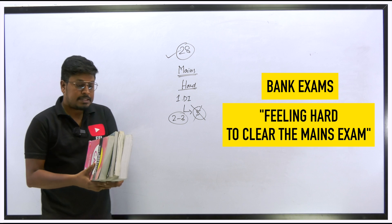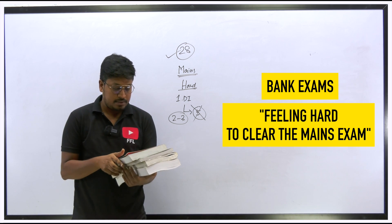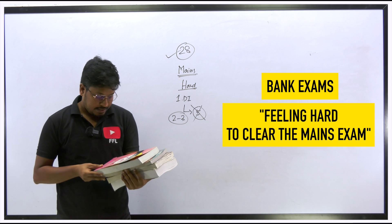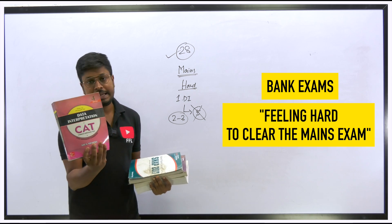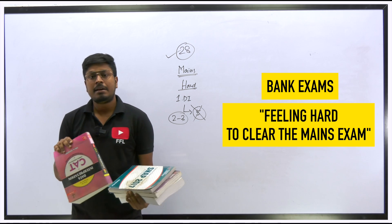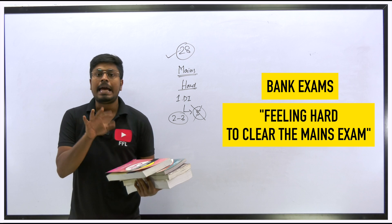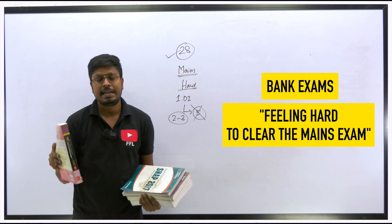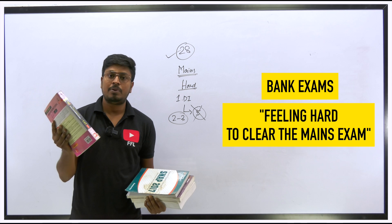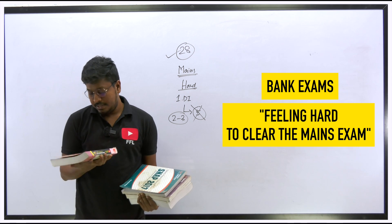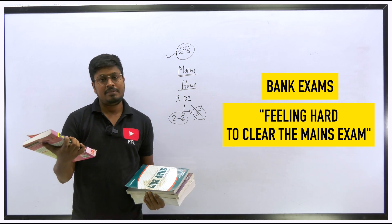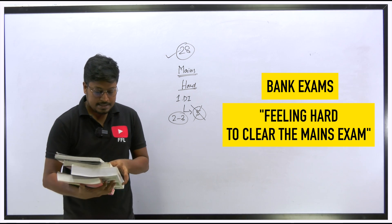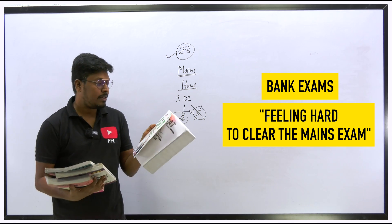These are the four books I always recommend for the mains exam — for data interpretation and quantitative aptitude. First is Arun Sharma sir's book, which is for the CAT exam. If you are preparing for the bank mains exam, try to follow some CAT-level question paper books, because recent bank mains questions are very tough, equal to CAT exam level. Here you can see this is the fourth edition and it has difficult-level data interpretation for CAT exams.